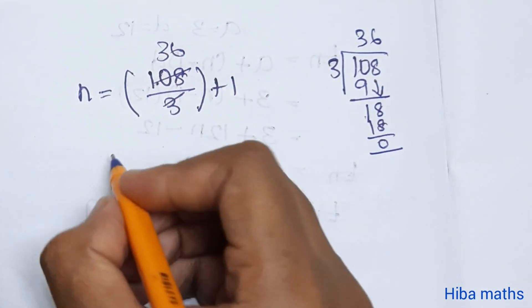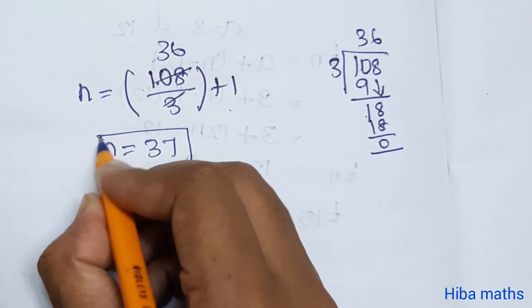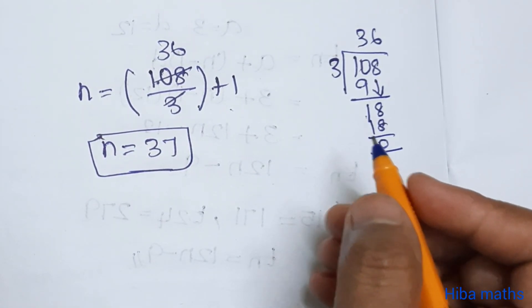So, 36. Therefore, n equals 36 plus 1, which is 37. Do you understand? It's very easy. You can try to get two marks. Thank you so much for watching.